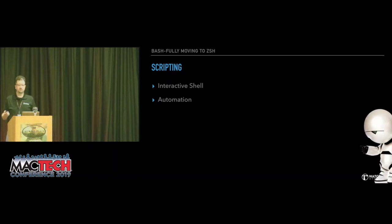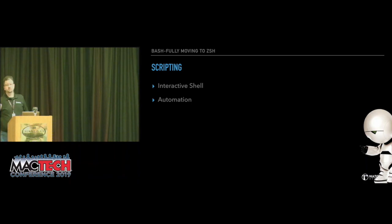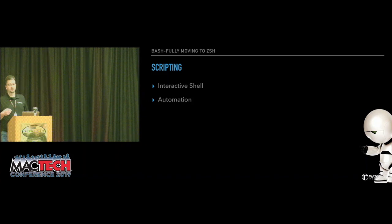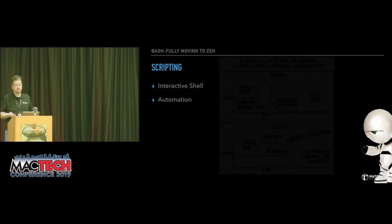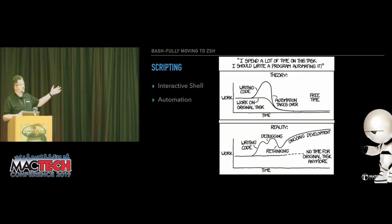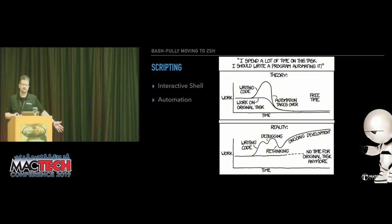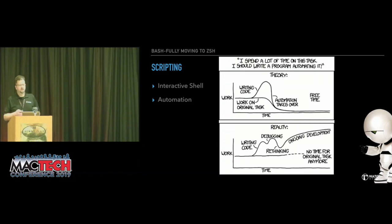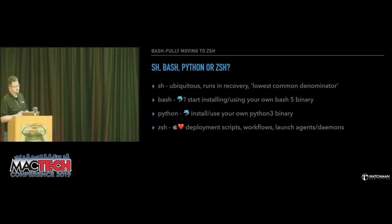We've been talking about how ZSH works as an interactive shell. The interactive shell is the most direct way of using the shell, and configuring some of these things can be a huge boost to productivity and usefulness. Another equally important aspect of shell is running scripts — writing a little bit of code to automate tasks. As the xkcd comic shows, we just keep doing ongoing development and don't have time for the original thing we wrote the code for.